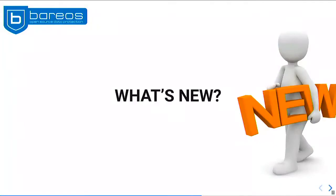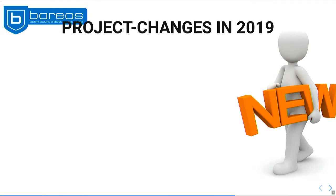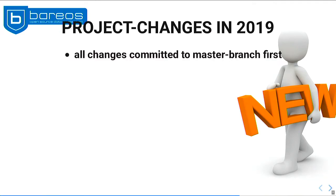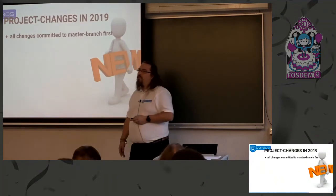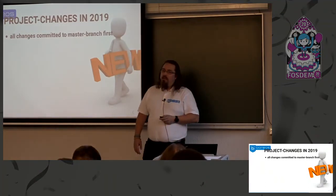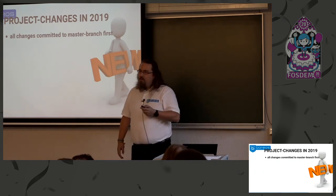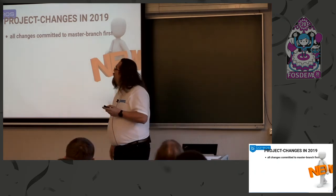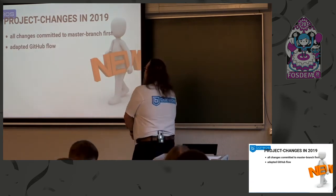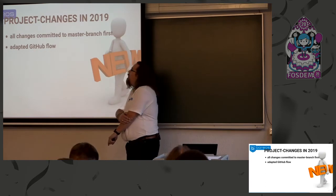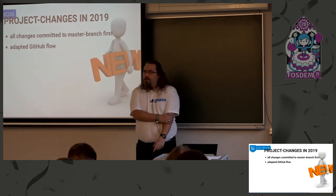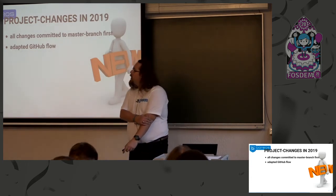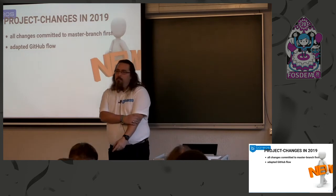So, what's new — what did we change in the project? First of all, nowadays all our commits go into the master branch. This might seem obvious — to us it wasn't. Now it is. We adapted the GitHub flow, which means we work on things, publish them as pull requests, discuss them publicly — even internal changes — and then either accept them or we don't.